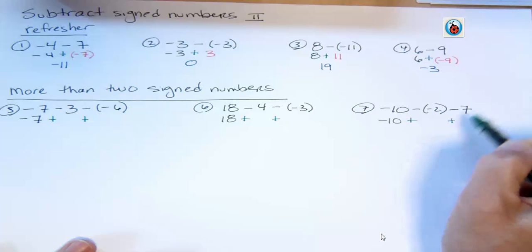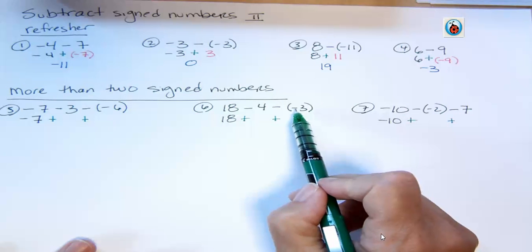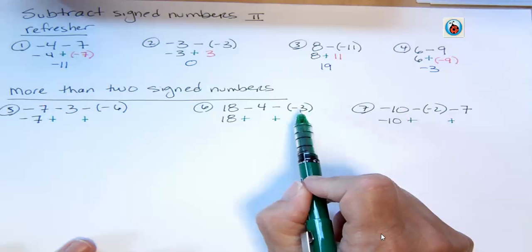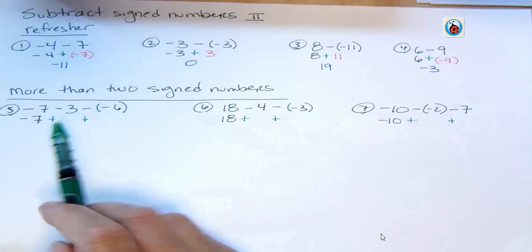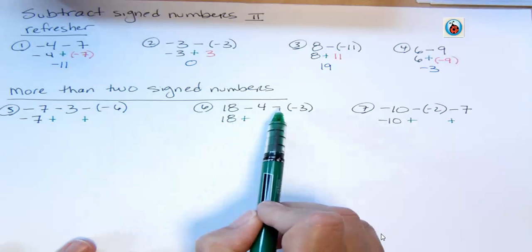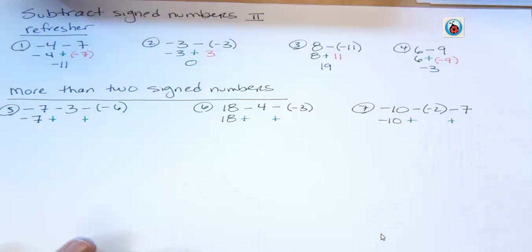Every subtraction symbol becomes an addition. Well, you might say, why isn't that one changing? Well, that's not a subtraction symbol, that's a negative. And we actually are going to change that, but first we're just dealing with the symbols, the operation symbols that are subtractions.